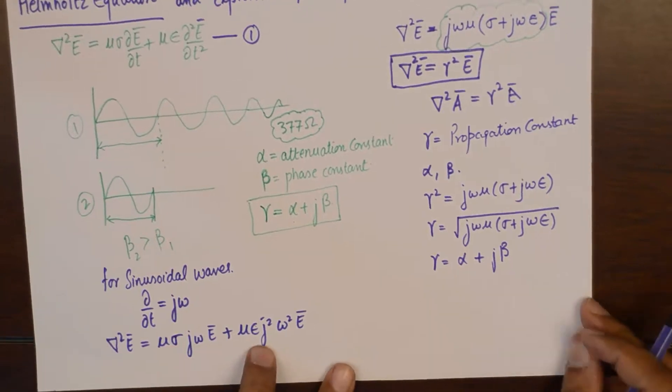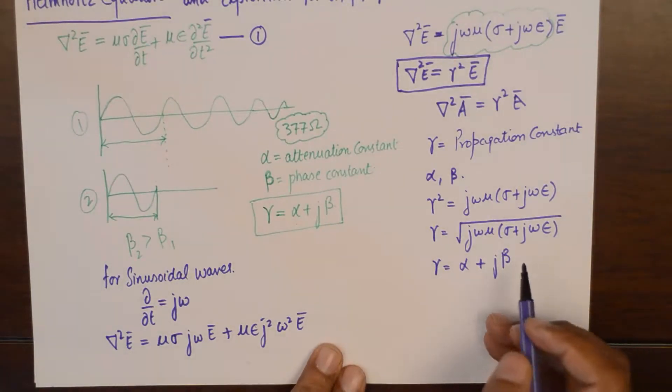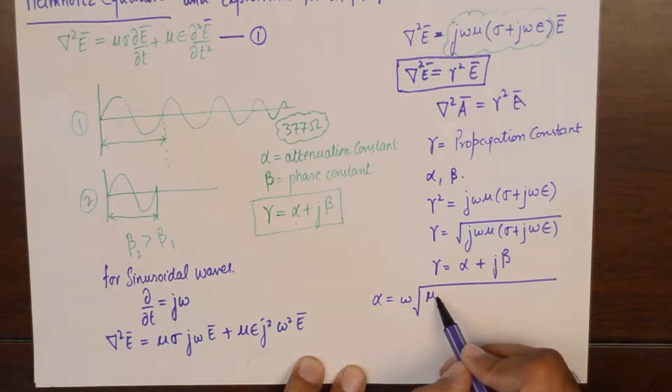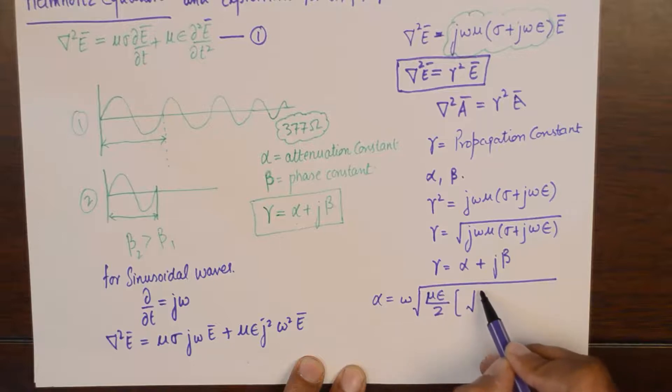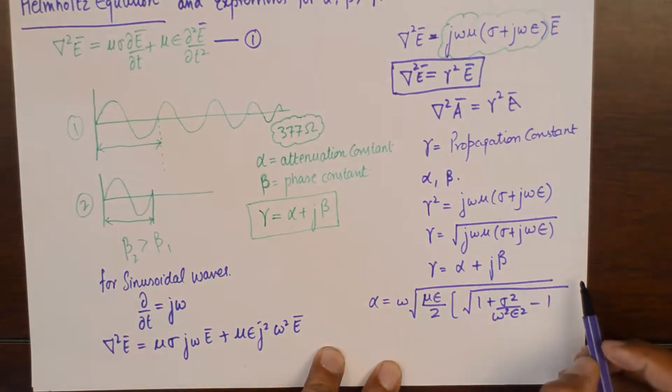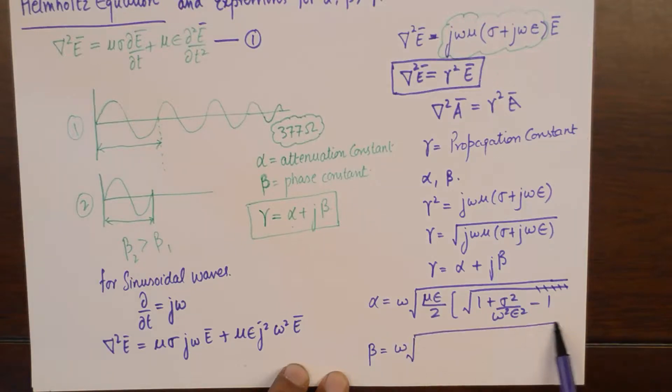I'm just writing this value directly. If you wish you could solve and separate the real and imaginary parts. The value of alpha will be omega mu over 2 times the square root of 1 plus sigma over omega epsilon squared minus 1. And similarly beta is everything the same, but this minus sign will be substituted or replaced with a positive sign.